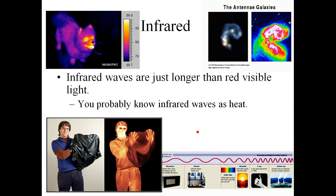Infrared rays are just longer than visible light red — you probably know them as heat. You can see an infrared picture of a dog showing the hot areas not covered by fur. Infrared cameras can also see through objects by detecting heat, as shown in movies like Predator. Your television remote control also uses infrared — a longer type, more like a microwave, not the heat version.